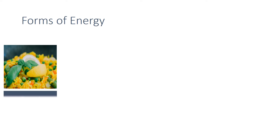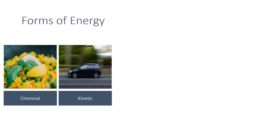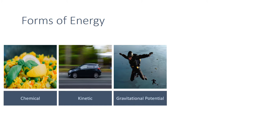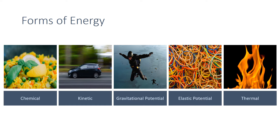Energy can be stored and transferred in a variety of ways, such as chemical energy in food and fuels, kinetic energy in moving objects, gravitational potential energy in objects stored above the ground, elastic potential energy which is stored in springing objects that are stretched or squashed, and thermal energy in objects which have heat.